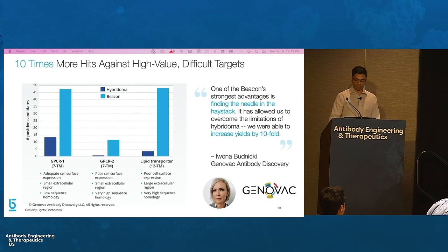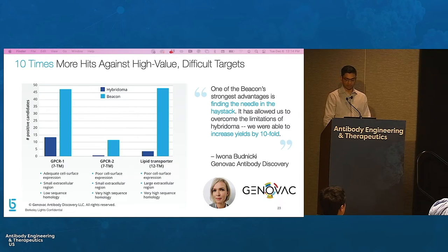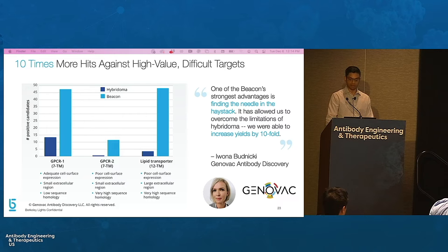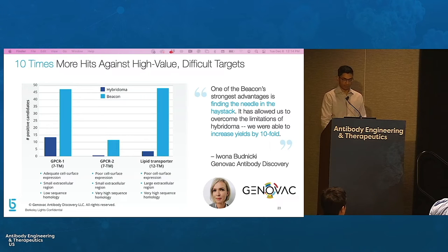Our customers have demonstrated how Opto-Plasma B discovery workflows can successfully yield hits against difficult membrane antigens like GPCRs. The slide depicts data from the team at Genovac, who successfully discovered antibodies against three transmembrane targets exemplifying common problems with difficult targets: small extracellular regions that reduce targetable sites, high sequence homology that reduces immune response and antigen-specific B-cell frequency, and poor cell surface expression that makes cell-based screening difficult. Across all three targets, they found approximately 10 times as many hits as compared with traditional hybridoma.